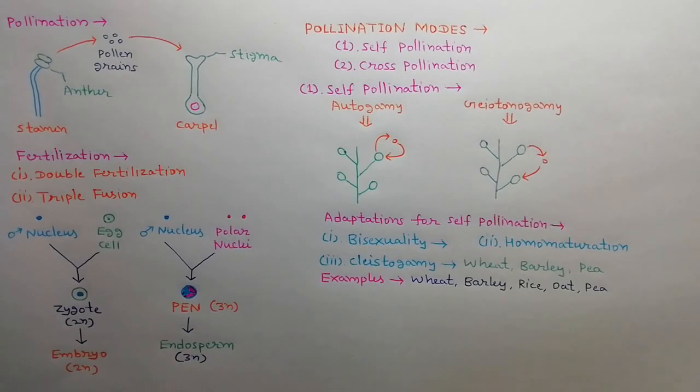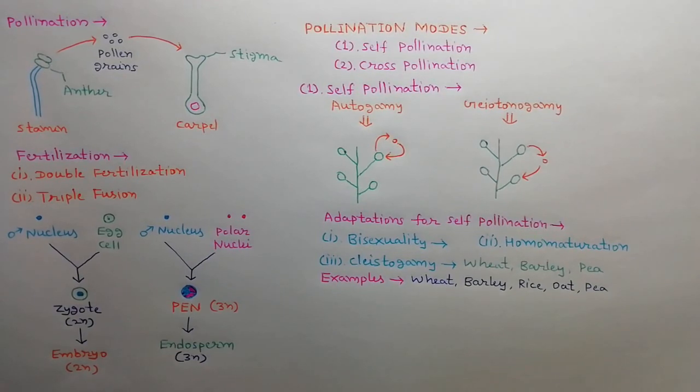Examples of self-pollinated crops are wheat, barley, rice, oat, pea, etc.